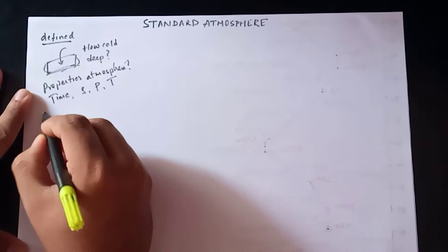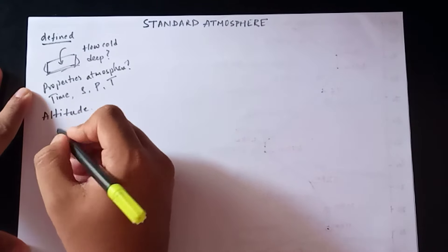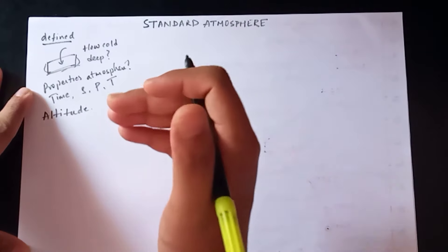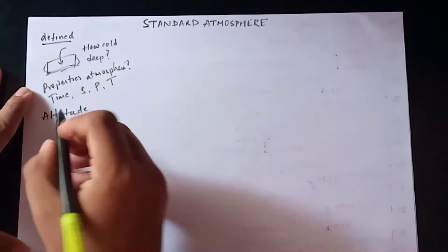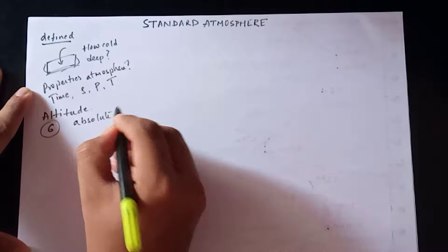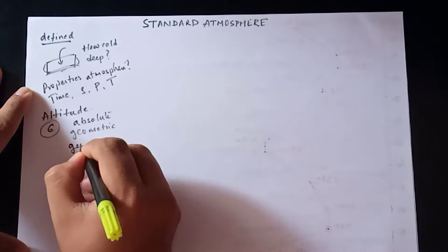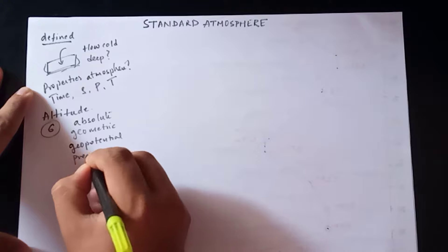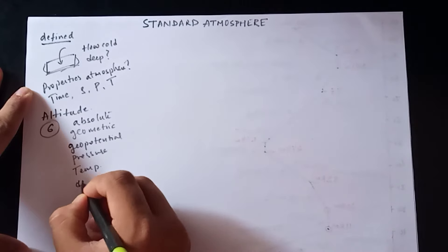Altitude, like many other general terms, is thought of as a distance above the ground, but it must be more precisely defined for use in engineering. There are six different altitudes: absolute altitude, geometric altitude, geopotential altitude, pressure altitude, temperature altitude, and density altitude.